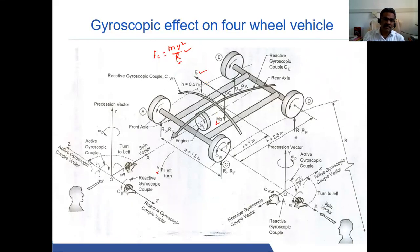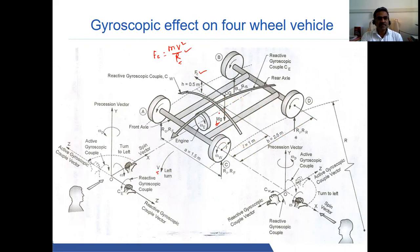The weight, mass into gravity, is also acting. Taking the dimensions — 2.5 meters and 1.5 meters — the front wheels will be subjected to more load than the rear wheels if the center of gravity is not exactly at the center. Since it is not at the center, the load distribution is unequal.